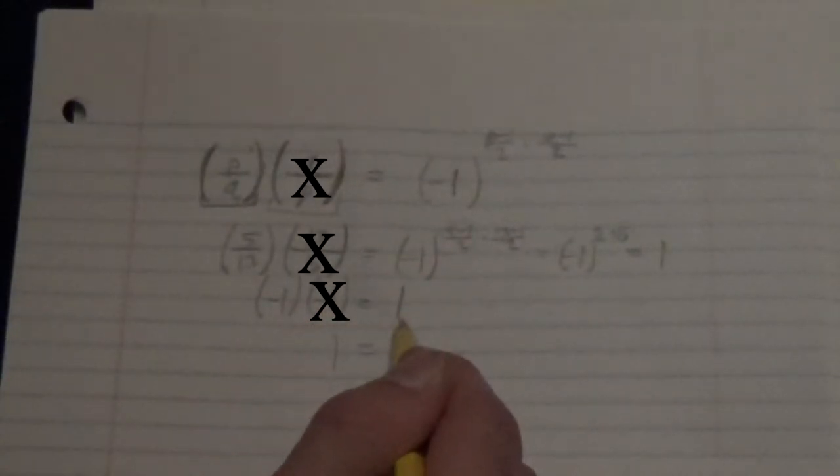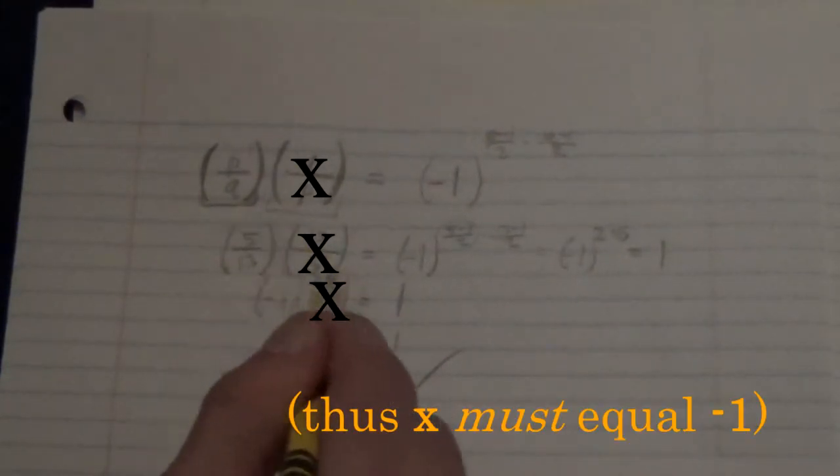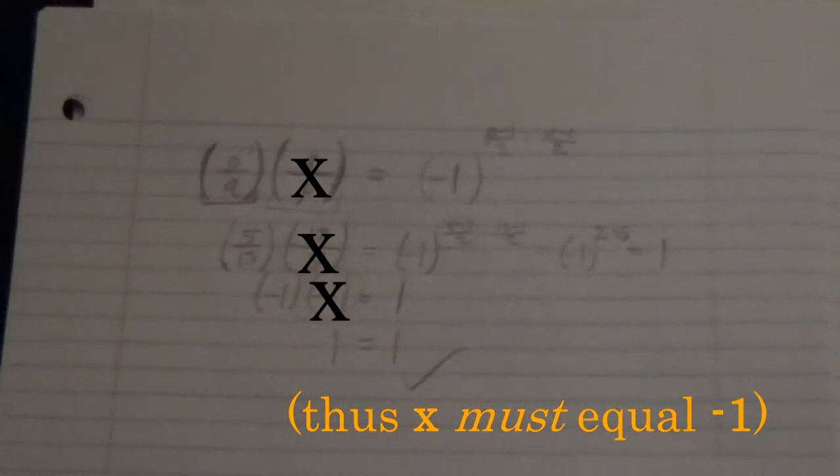So in this case, it would have been negative 1 times x is equal to 1, and of course multiply both sides by negative 1, and you can get that x, this missing value in theory, would be a negative 1. And so it's very interesting, another way of getting to that answer.